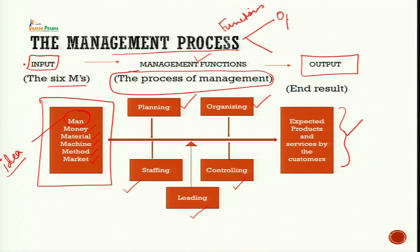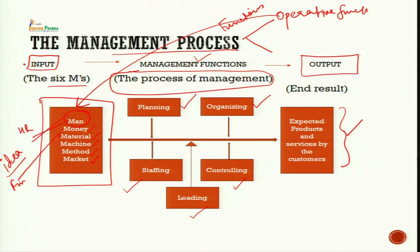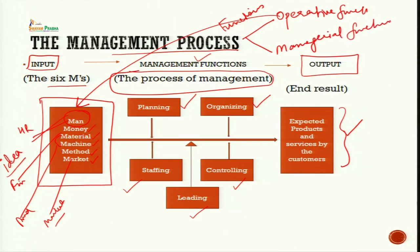One category is called operative functions. The six M's of management are operative functions. They pertain to HR, finance, production and marketing functions of the organization. The second category of functions are called managerial functions — planning, organizing, staffing, directing and controlling. I hope students you are now clear about the two terms: operative functions of management and managerial functions of management.